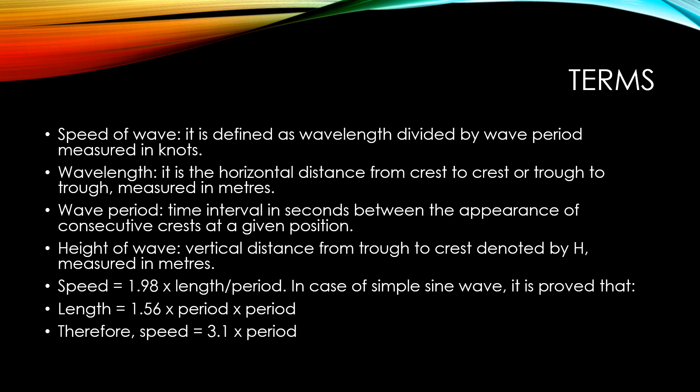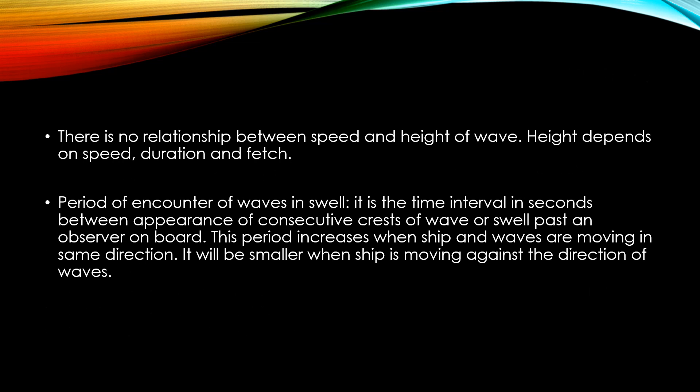Wave period is the time interval in seconds between the appearance of consecutive crests at a given position. Wave height is the vertical distance from the trough to the crest, denoted by H, measured in meters. There is no relationship between the speed and height of a wave — height depends not only on speed but also on duration and fetch.